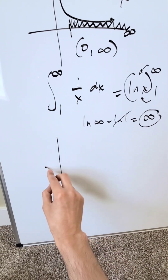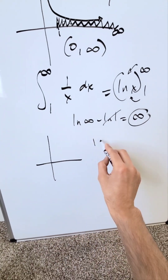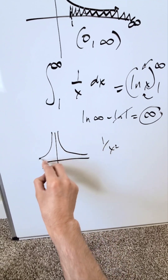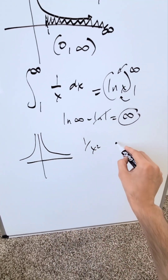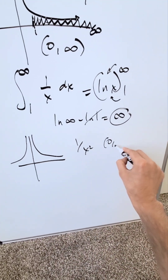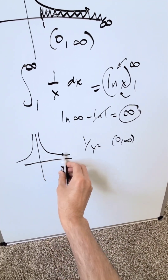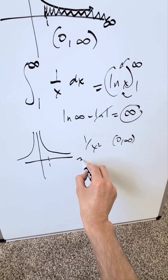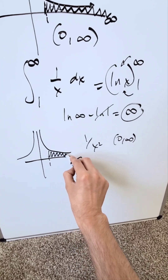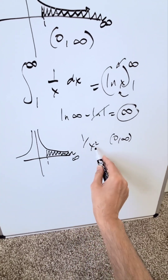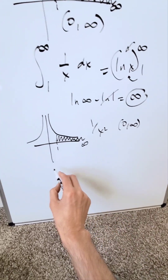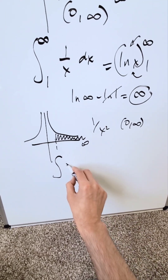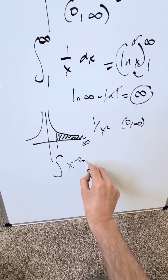However, if I change the function to 1/x², the graph looks something like this. I'm focusing on the region from 1 up to infinity — the right-side area. To determine this shaded region by means of an integral, I rewrite 1/x² as x to the minus 2, which is the same thing.